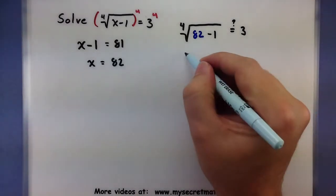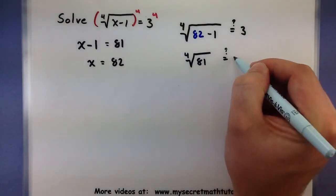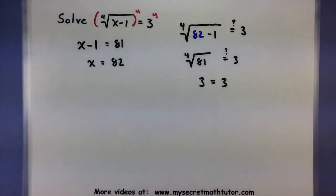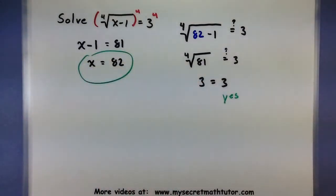All right, working on the inside, you can see that we're taking the fourth root of 81, which is 3. So this one definitely checks out. So x really is equal to 82.